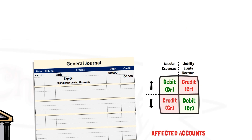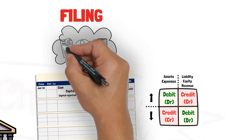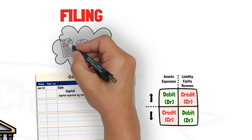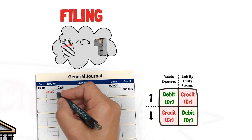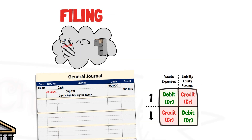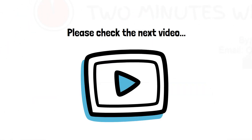After recording the transaction, the source documents should be filed, and a reference number is written here that traces the entry to its source documents for future reference. Let us practice with journalizing a few transactions.